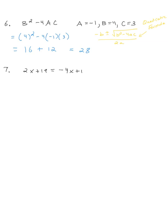Solving the following linear equations for x. I'm going to add 4x to both sides, which gives me 6x plus 19 is equal to 1. Now I'll subtract 19 from both sides, giving me 6x is equal to negative 18. And if I divide both sides by 6, I end up with my answer of x is equal to negative 3.